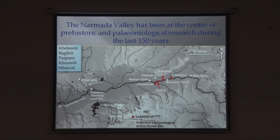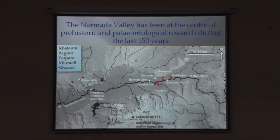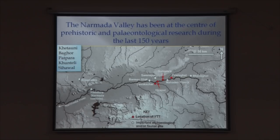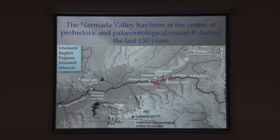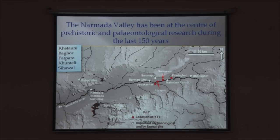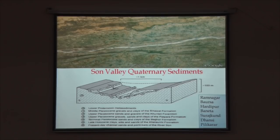The Narmada Valley is also well known for the earliest discovery of a Lower Paleolithic site in the 1860s, 150 years ago. The site of Hathnora is very famous as the only evidence of a human cranial fossil in India, with associated fragments of clavicle. Some sites are volcanic ash sites, which have helped in reconstructing the context and dating of paleolithic material. The Son Valley has seen much more intense research activity since the 1980s.